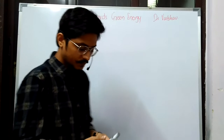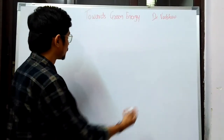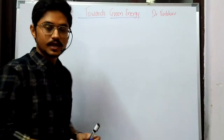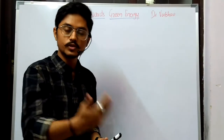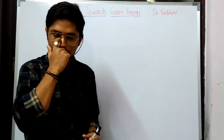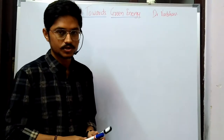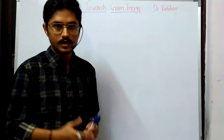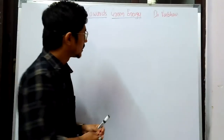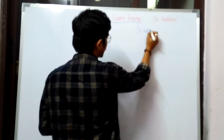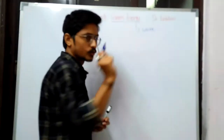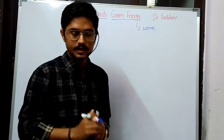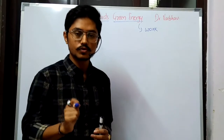Towards green energy — that is chapter number 5. So it is towards green energy, meaning we have started moving towards green energy. Energy — you all know what energy is. It is the capacity to do work. Anything that is happening is because of energy.